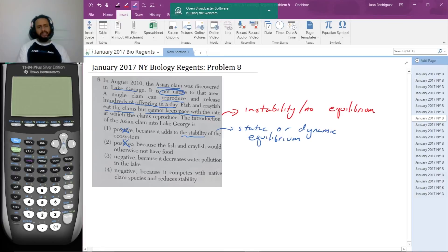The next one, again, positive? Yeah, no. Because the fish and the crayfish would otherwise not have food, this has to be false. Why does it have to be false? Think about it. If the fish and the crayfish didn't have food otherwise, wouldn't they die? Wouldn't they disappear? Wouldn't they become locally extinct? They would because they don't have food.